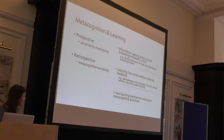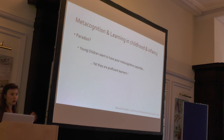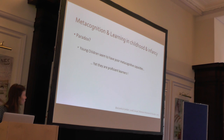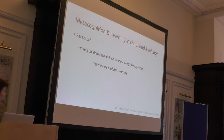Those are two examples of how you could use metacognition for learning and information seeking. Turning to the developmental literature: the reason my supervisor Sid Quida and I started being interested in this question is because there has been a paradox in the literature. On the one hand, people have been documenting that young children seem to have really poor metacognitive abilities. And on the other hand, as Katrina talked about before, people have been documenting that they are really proficient learners.